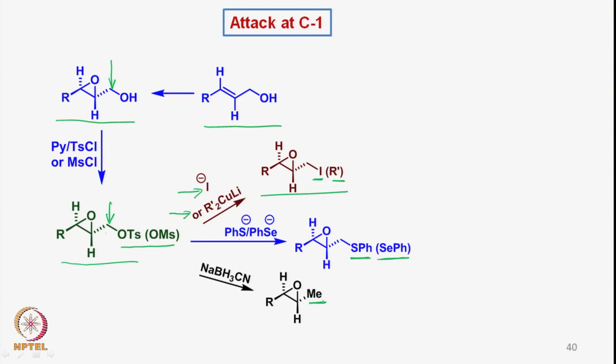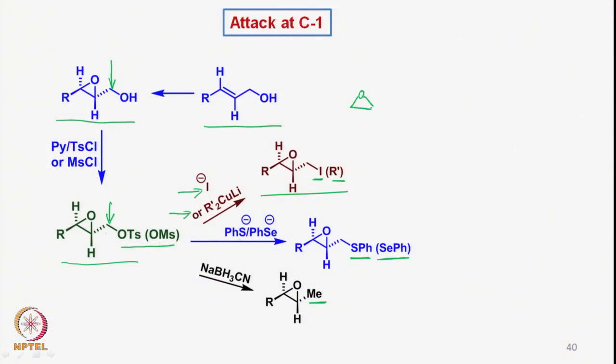This is how the reactions can be carried out at the three centers of the epoxide—at carbon-1, carbon-2, or carbon-3—depending on the reaction conditions chosen.